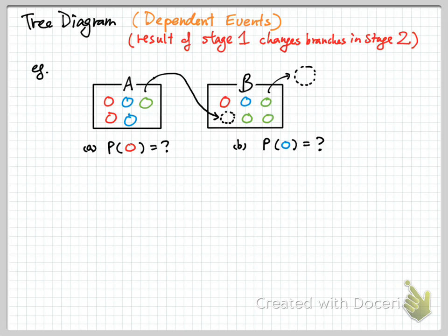The question is: what is the probability of picking a red or a blue from box B? In the first stage, we pick from box A. But then, depending on the color — if a red goes to box B — the probability of the three colors are no longer the same.